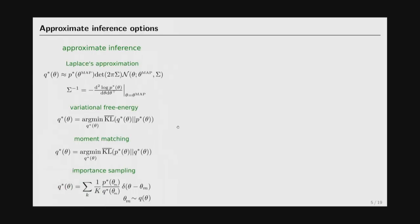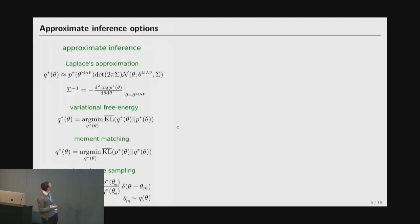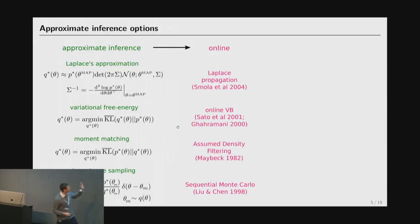This I'm going to go through very quickly, but suffice it to say there are a bunch of different approximate inference schemes in the literature. Laplace's approximation, variational free energy methods, moment matching, and importance sampling are four that I picked out here. If you transfer them to the online setting, we can plug them into the equations on the previous slide, wherever we had those approximate arrows projecting down to a queue. And we get a thing called Laplace approximation, online VB, assumed density filtering, and sequential Monte Carlo when we apply exactly the operation on the previous slide to those four approximate inference schemes.